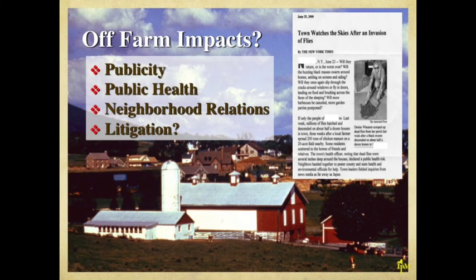This illustration points out several things. One is the possibility of large populations of flies emigrating off the farm into neighborhoods, bringing bad publicity to the farm itself. There's also the consideration that some of the flies could be carrying microorganisms such as E. coli and salmonella. Certainly flies in the neighborhood are not going to be good for relationships between neighbors and the farm, and there's always the possibility of litigation.